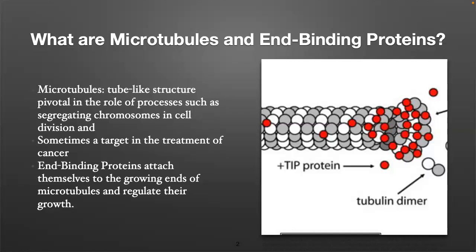Another neat feature about microtubules is that they grow through periods of growth and shrinkage. With the end-binding proteins, however, they form at the ends of microtubules and they regulate the microtubules' growth and/or shrinkage.